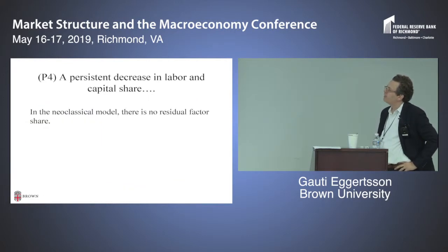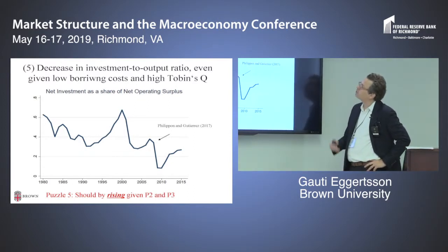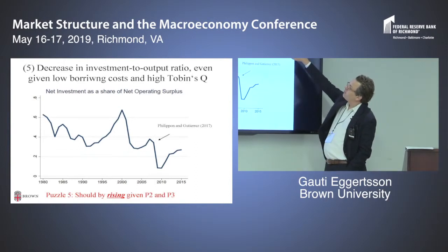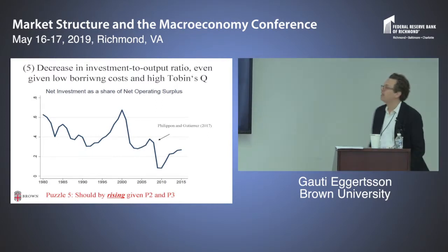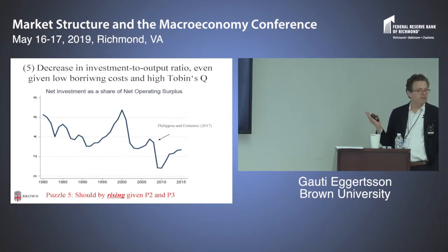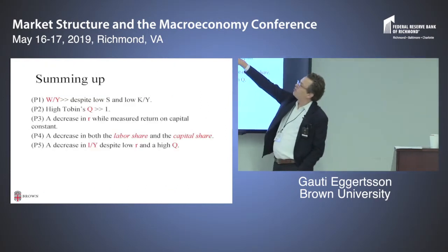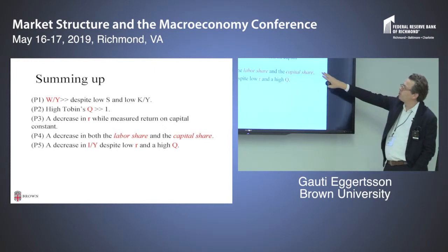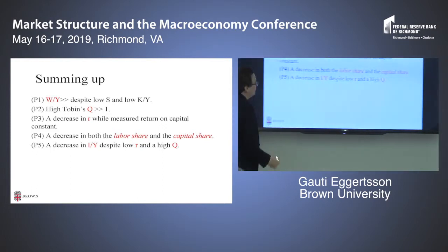Finally, the fifth puzzle — and that was also one of the things we were trying to fix in the model with a declined real rate — there's been a decrease in the investment-to-output ratio, even though we have historically low borrowing costs and high Tobin's Q. So those are the five things: high wealth-to-output despite low capital-output; high and rising Tobin's Q; declining risk-free rate while measured return on capital appears constant; a decrease in both labor share and capital share, rising factorless income; and despite low R and high Q, there is a decrease in investment-to-output.